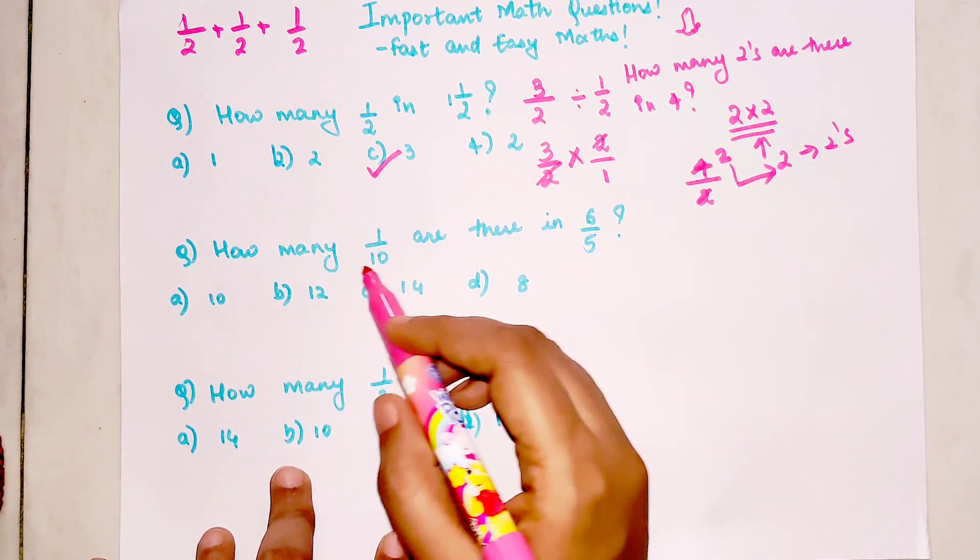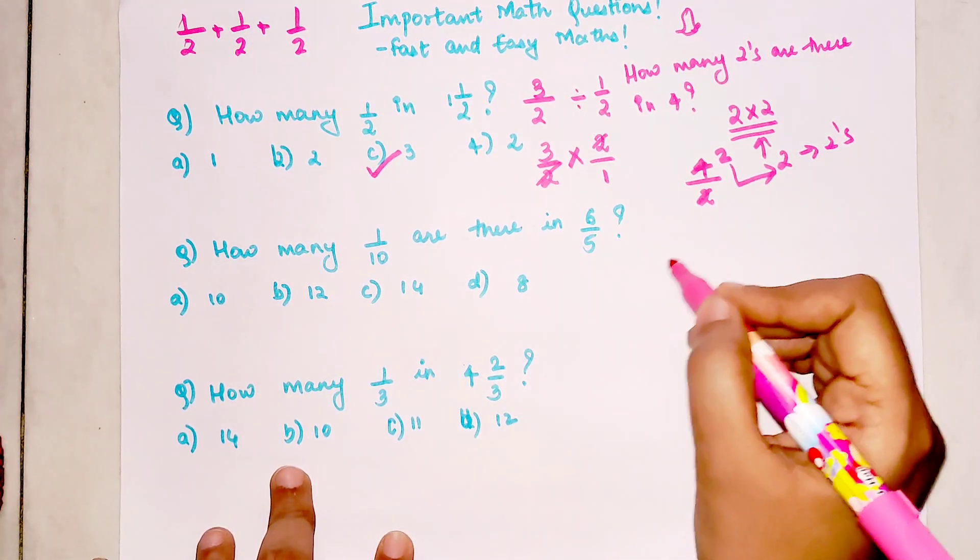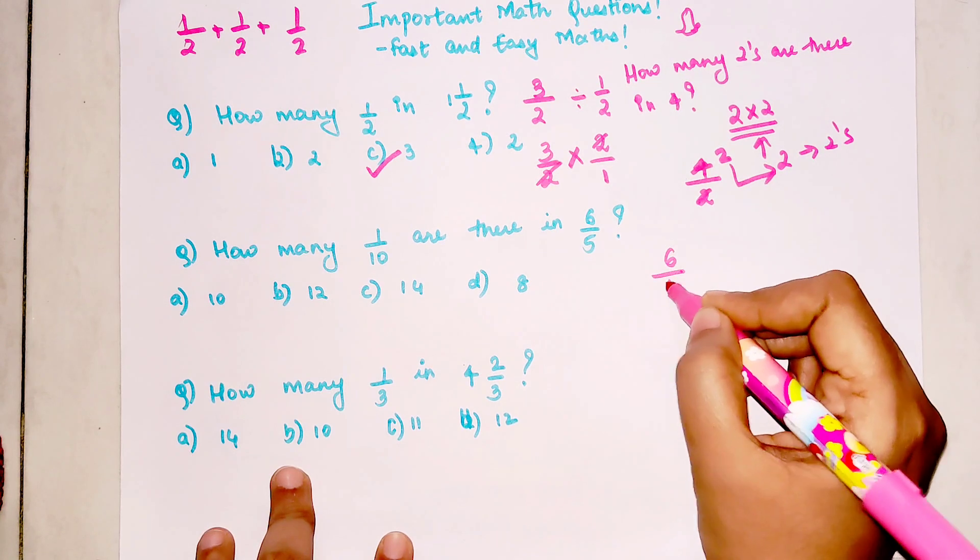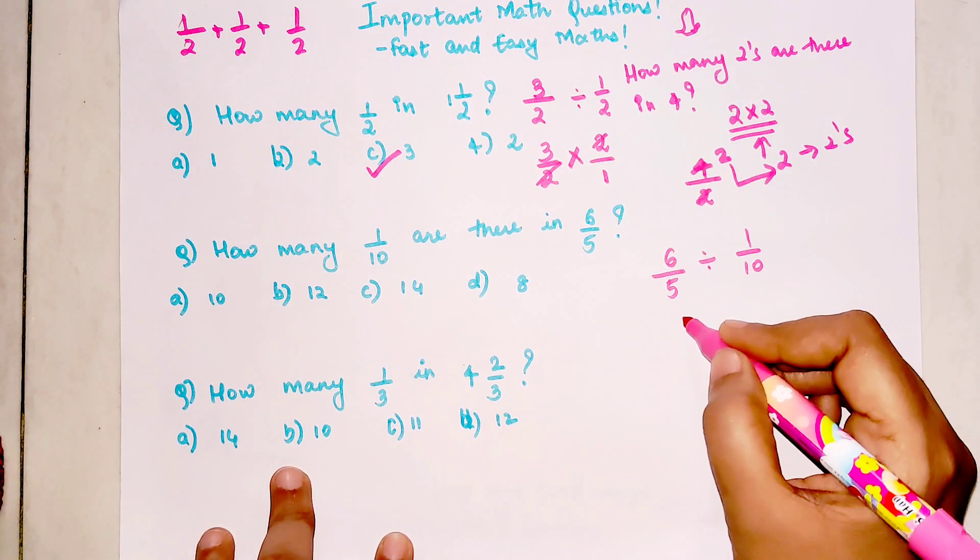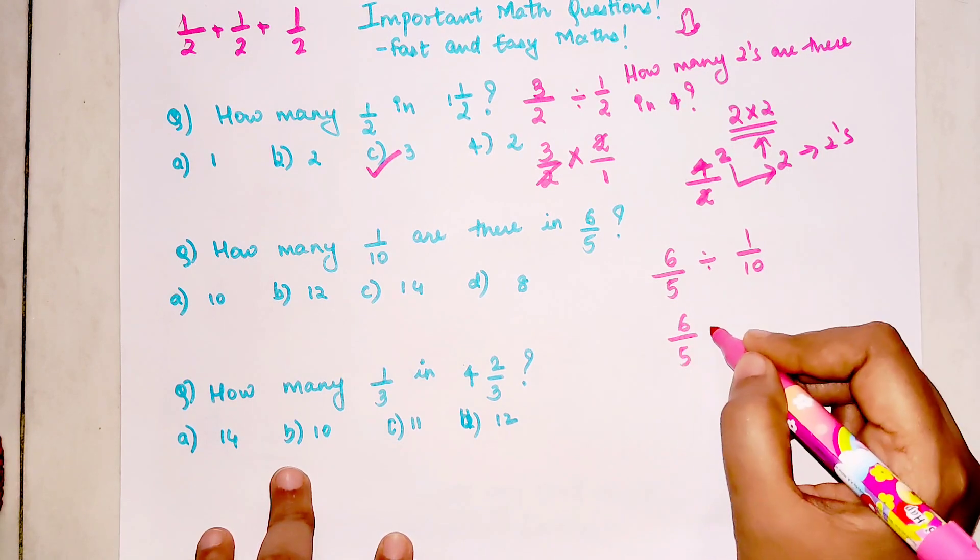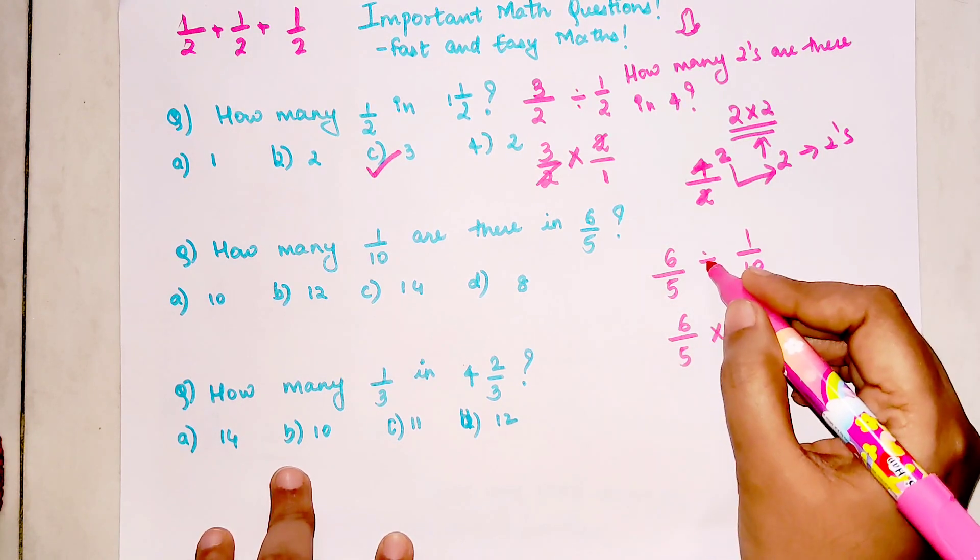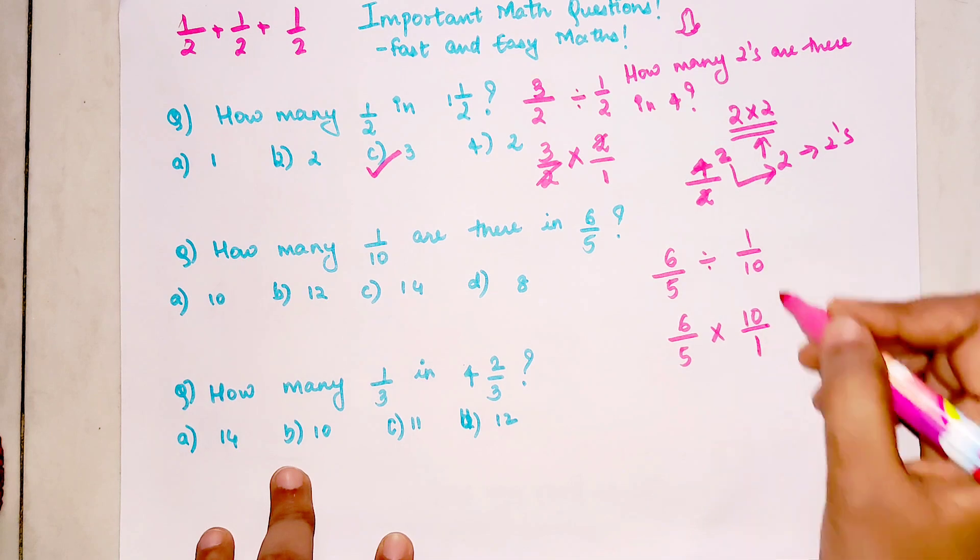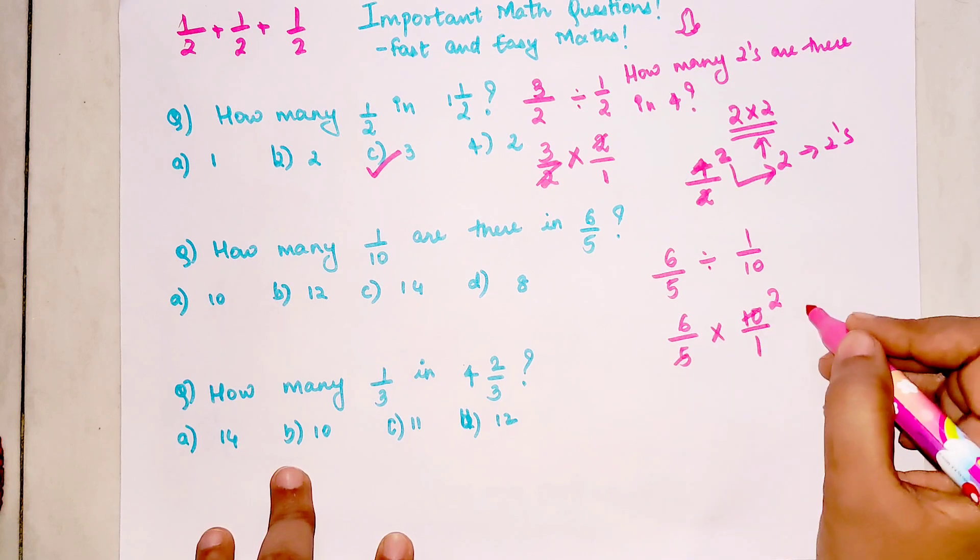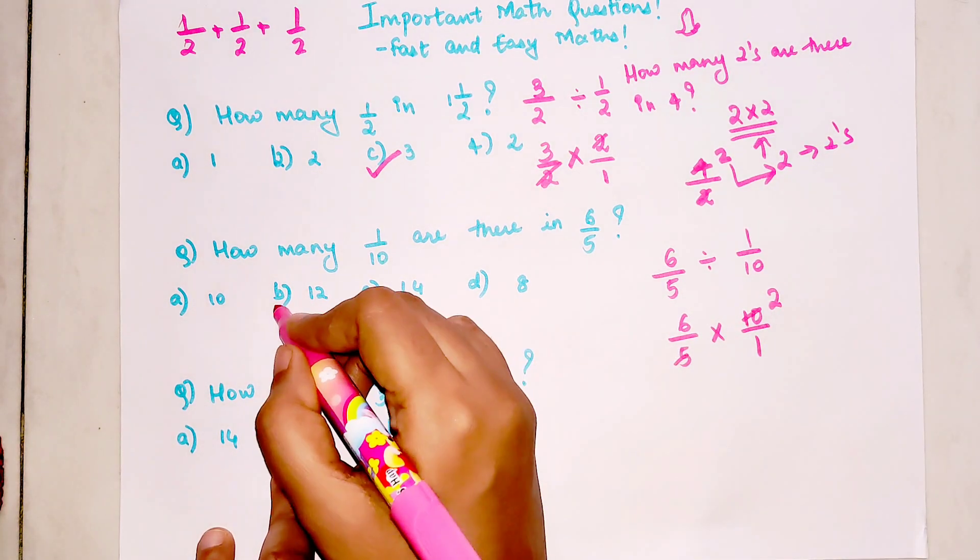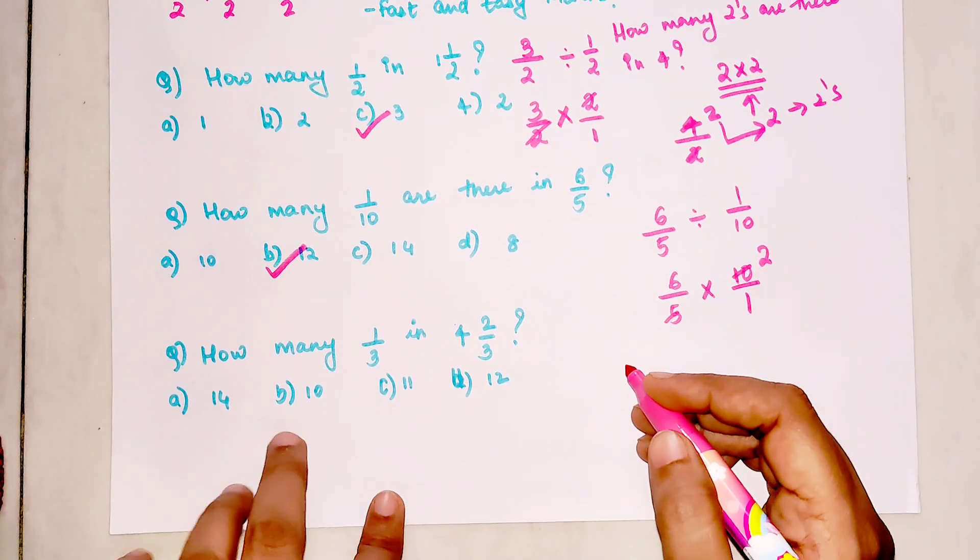The question is: how many 1/10 are there in 6/5? Simply we will divide 6/5 by 1/10. We can't divide the fractions like that, so we will multiply—change the sign of division into multiplication and change this fraction into its reciprocal. This is becoming 2, so the final answer is 6 times 2, which is 12.